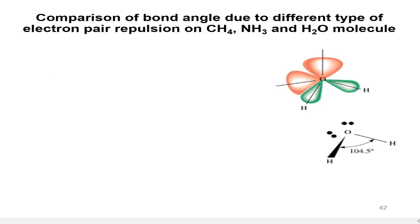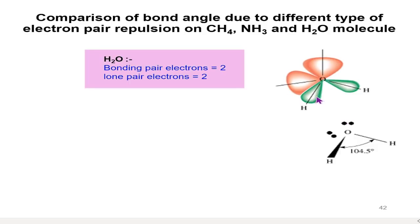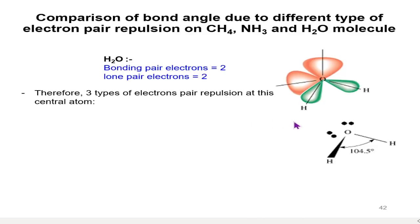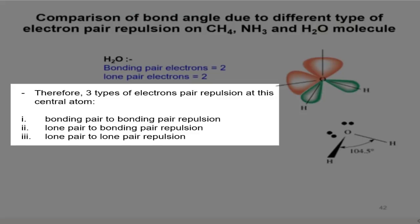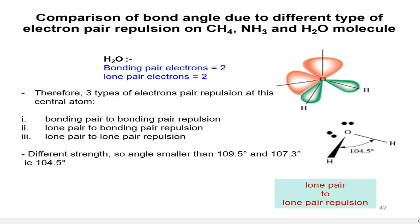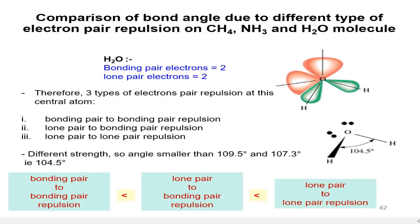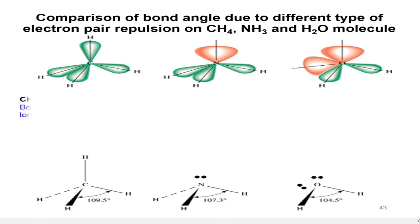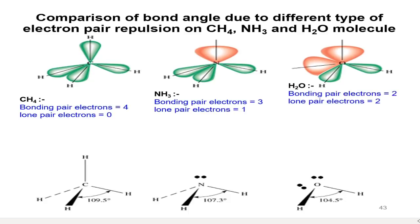For H2O, there are two lone pairs and two bonding pairs. Since there are two lone pairs, there is lone pair to lone pair repulsion, which has the greatest force of repulsion. So the bond angle is reduced to 104.5°, which is the smallest among the three molecules. Even though these three molecules have the same basic molecular shape, the bond angle is quite different due to the lone pairs existing in the molecule.